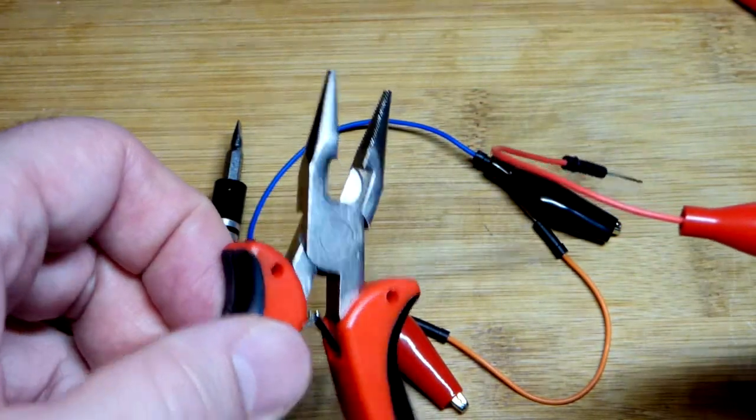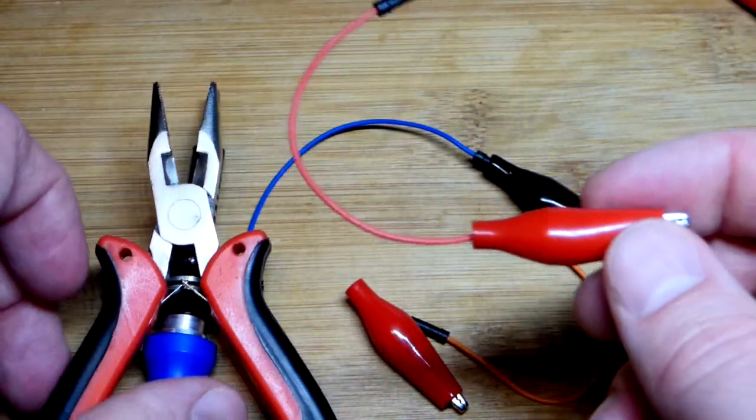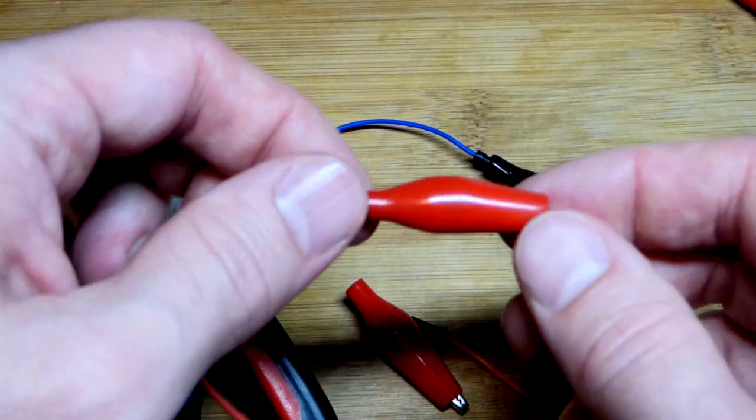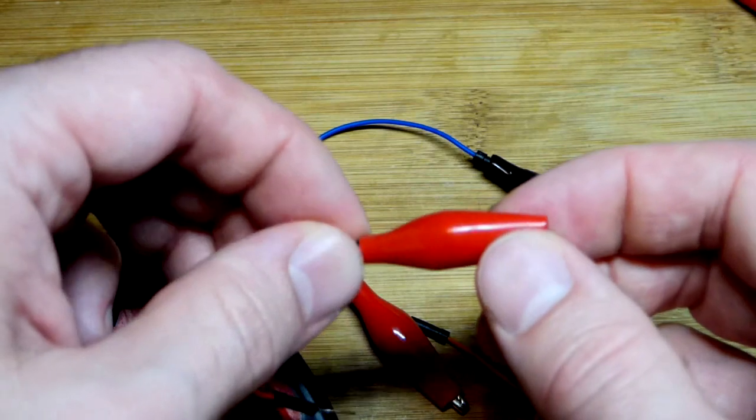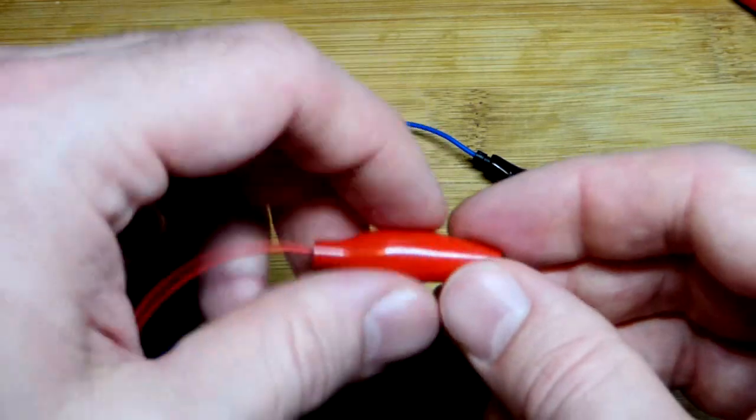I used pliers, these pliers right here, to crimp it down. Probably not the best way to do this, but it's worked pretty good. They're holding pretty well. The plastic is just sliding forward there.